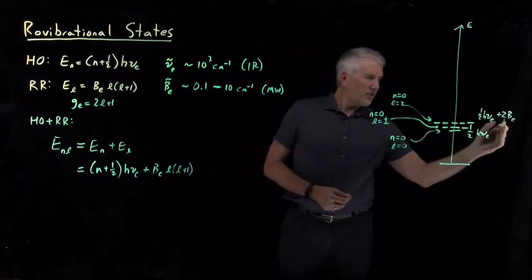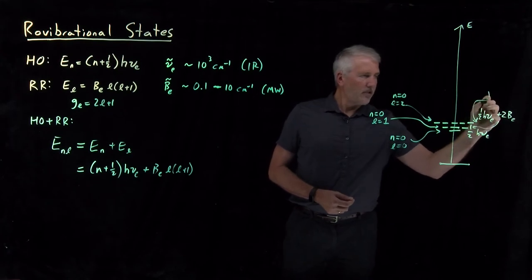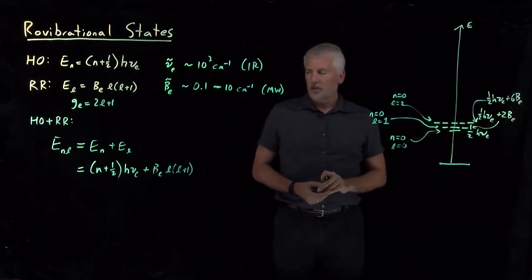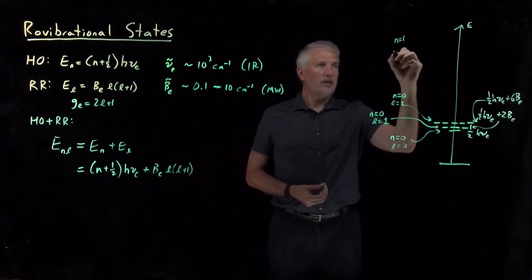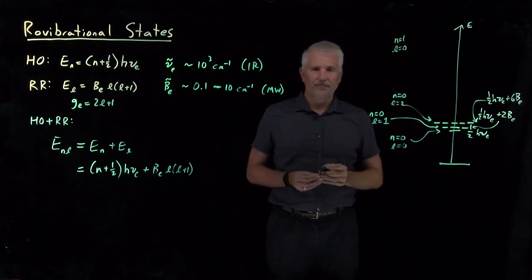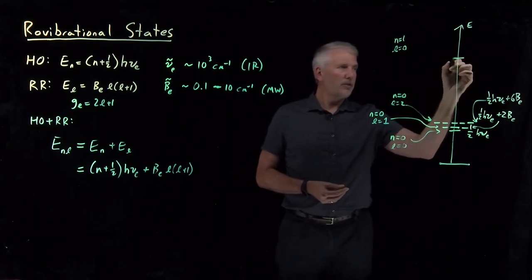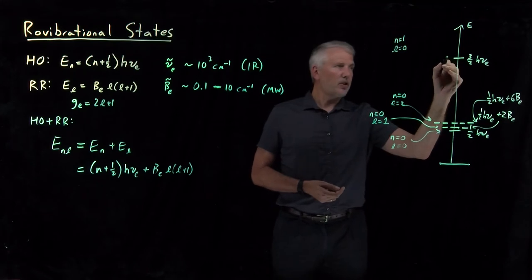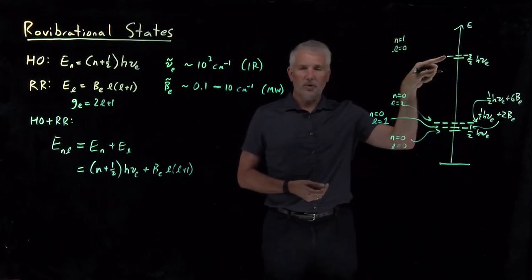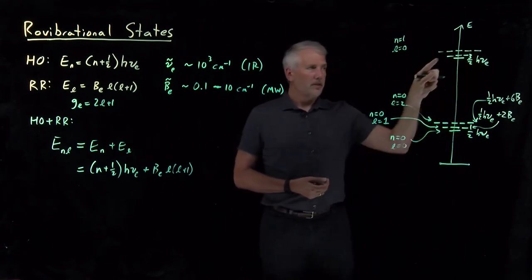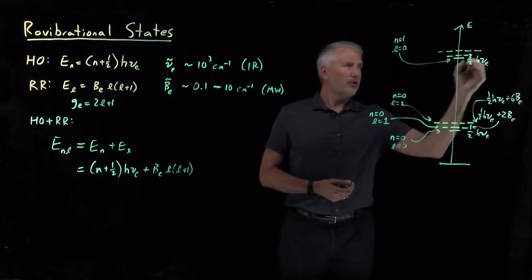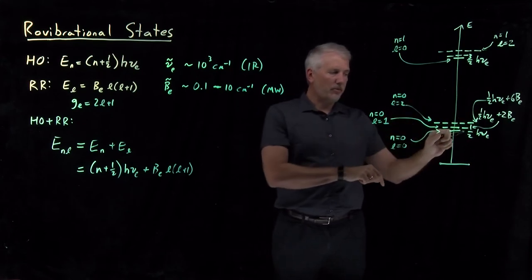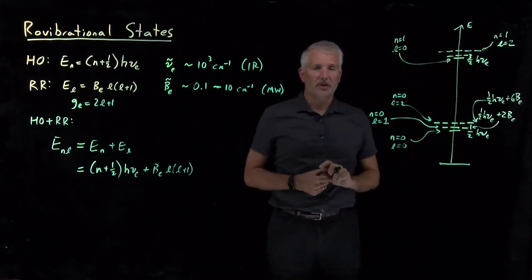The energy of the l equals 1 state is one-half h-nu plus 2B, and the l equals 2 state has an energy of one-half h-nu plus 6B. If we put the molecule in n equals 1, somewhere higher up we have the n equals 1, l equals 0 and l equals 1 states. If the ground state is one-half h-nu, the first excited vibrational level is at three-halves h-nu. Stacked on top of that vibrationally excited state are rotationally excited states: a triply degenerate state with l equals 1, and a five-fold degenerate state with l equals 2.